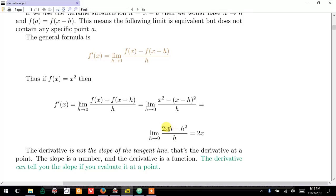Essentially, what you're left over with is 2x minus h. And you take the limit as h goes to zero. Well, at that point, you can just replace h with zero.